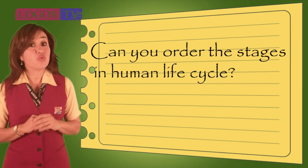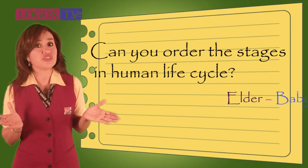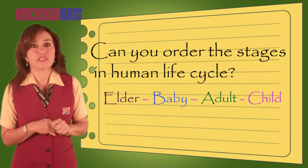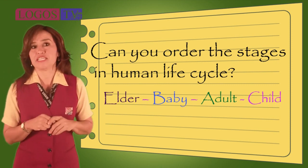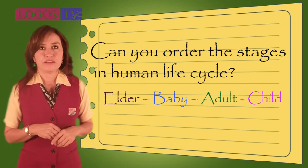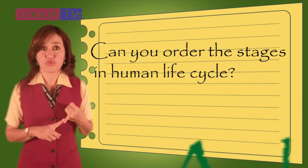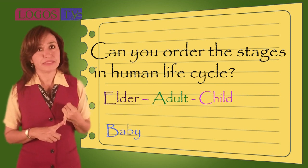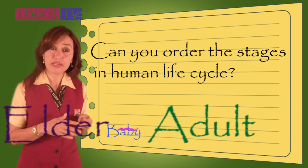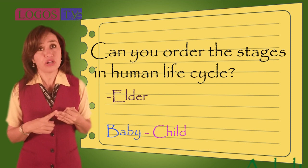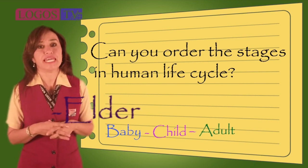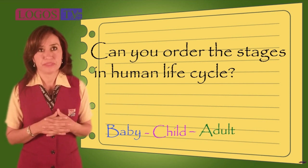Can you order the stages in the human life cycle? Look at the stages and try to order them. First, you are a baby. Next, you become a child. Then you are an adult. And finally, you are elder.